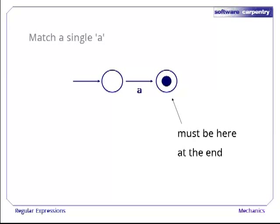The second state is marked with a dot in the middle to mean it's an end state. We must be in one of these states at the end of our match in order for the match to be valid. So now we have a finite state machine that matches the very simple regular expression a. Let's see if we can do something a little more interesting.